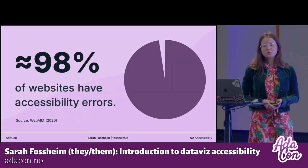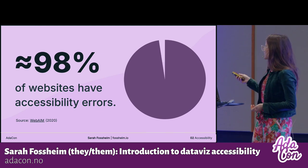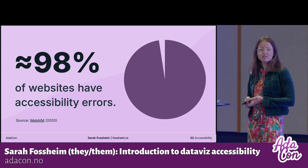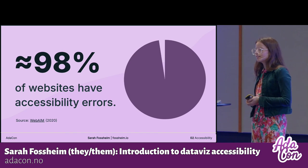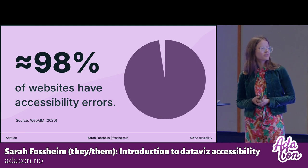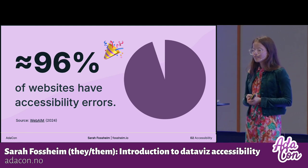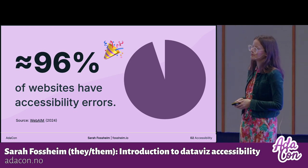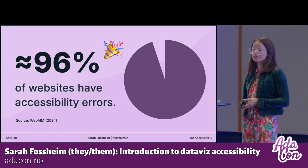In 2020, WebAIM did a survey testing the accessibility of the million most popular websites and found that 98% of them have accessibility errors — around 60 errors per page. This has improved: this year, only 96% of websites have accessibility issues. So we are making some progress.